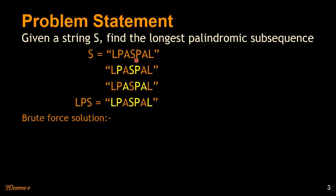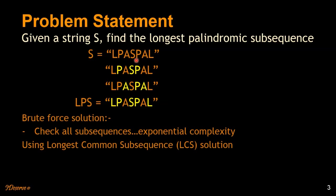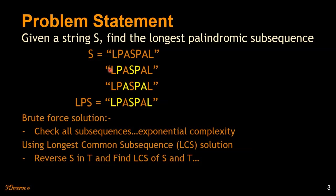The brute force solution is to compare all the subsequences and find the longest one. This would lead to an exponential complexity. The better way is to use the longest common subsequence solution. We can reverse the string S into T and then take S and T and find the longest common subsequence between those two. Please go through the other two videos based on longest common subsequence and longest palindromic substring. Going further, I am going to discuss an algorithm which is based on the LCS algorithm.